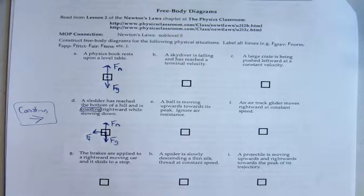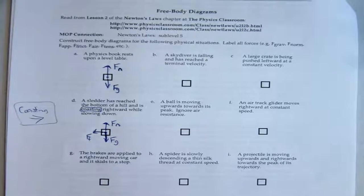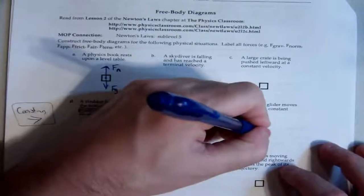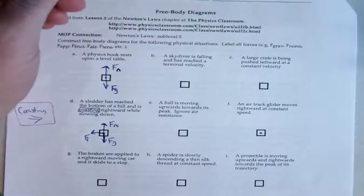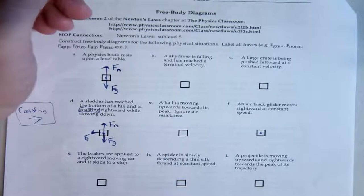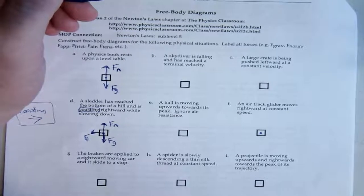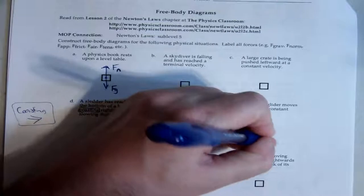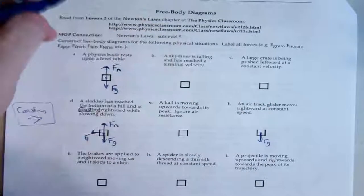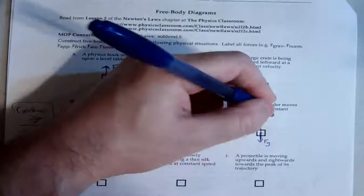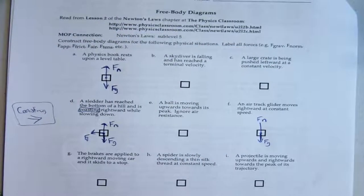So let's do one more. We'll crank it up just a little bit. Let's do F. So let's just start with our dot here. An air track glider moves rightward at a constant speed. So first thing you got to do, we got the force of gravity, obviously. We have the normal force. So it's moving to the rightward.